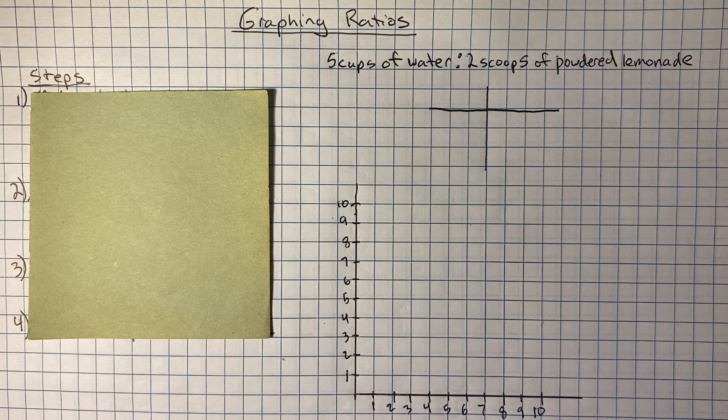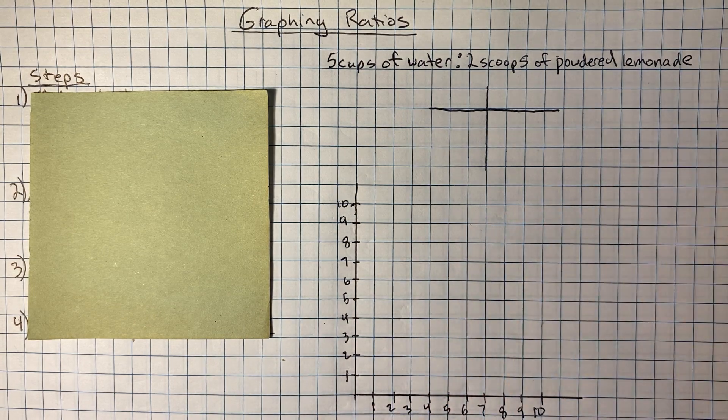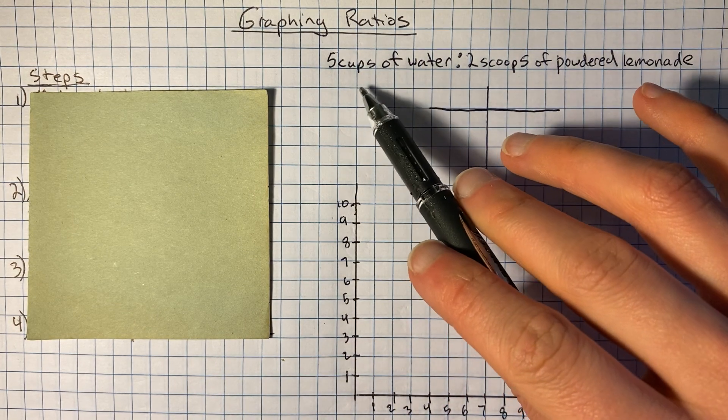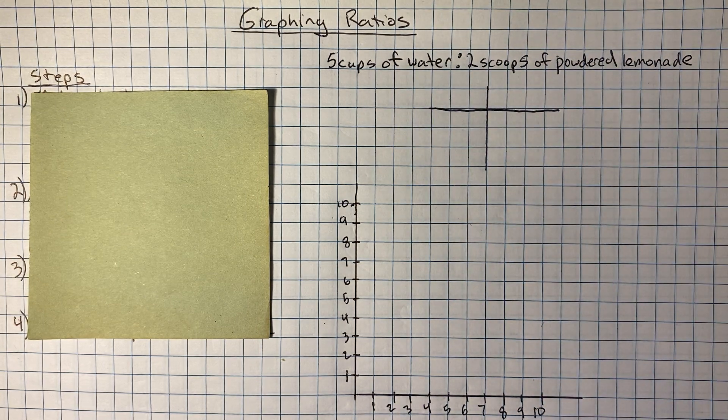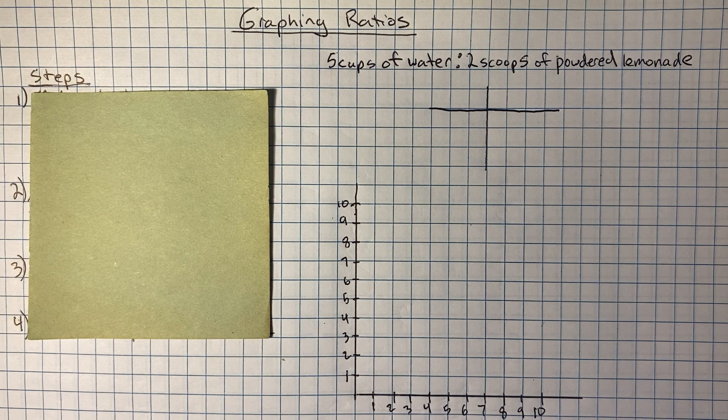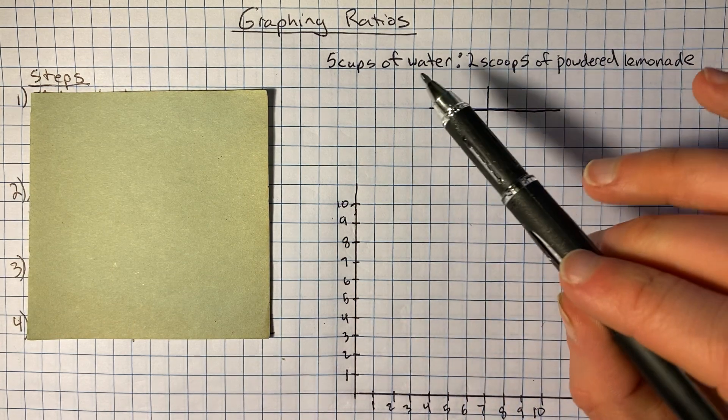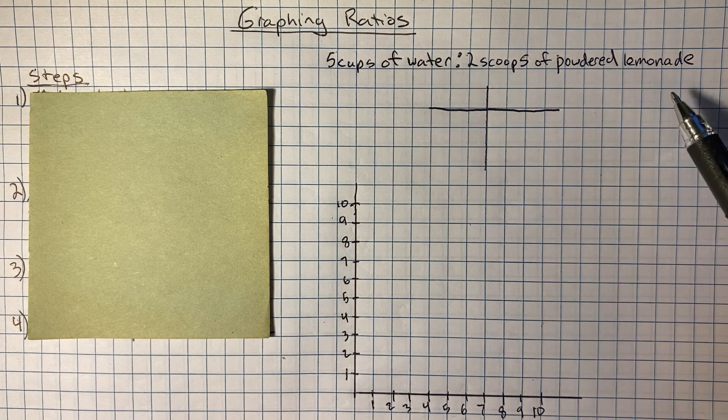Often when you're doing graphs of ratios, they're going to be things that kind of scale. So like you could do four cups of water, six cups of water, like that could grow. It's not usually like a comparison of two different things, like two red to three blue. But we'll keep going. So five cups of water, two scoops of powdered lemonade.